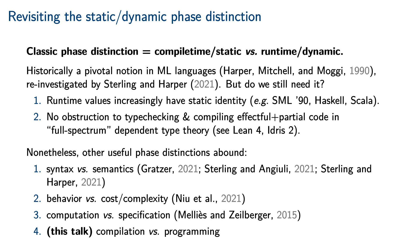Traditionally, the phase distinction expresses the non-interference of runtime code on static code. Historically, this was a pivotal notion in the development and design of ML languages and their module systems, and there have been a lot of takes on it in the literature since it was first introduced. But do we still need it? Runtime values increasingly have a static identity, even going back to the strong structure sharing of SML90, as well as the singletons in modern Haskell and the path-dependent types in Scala. Furthermore, while in the past it was unclear how to compile partial and effectful code in the presence of dependent types, there is no present obstruction to doing so, as we can see from the experience of the Lean 4 and Idris 2 implementations. Therefore, we fear that the original motivations of the static-dynamic phase distinction hold very little force in the year 2021.